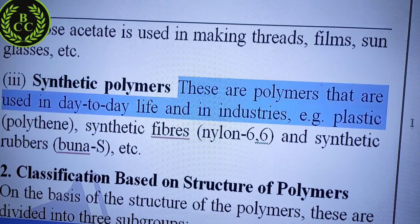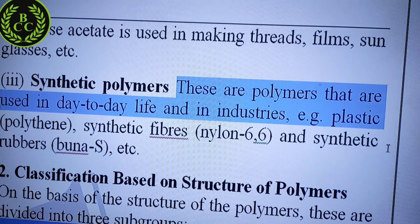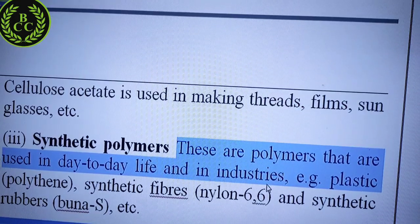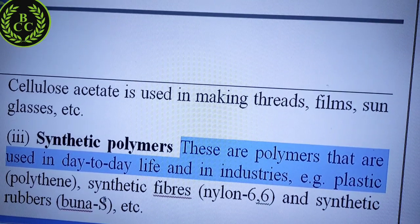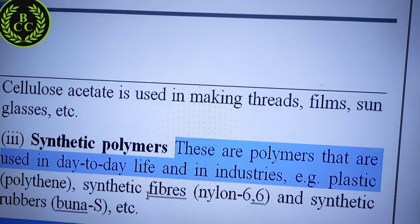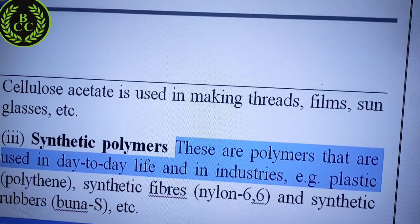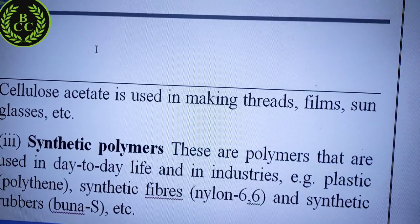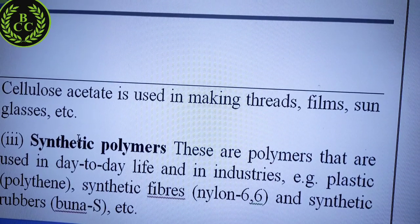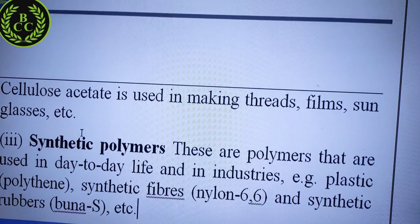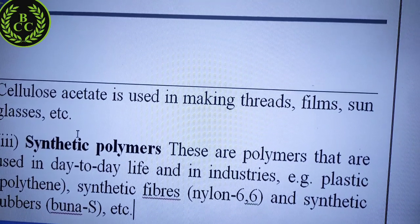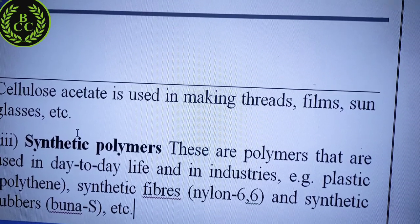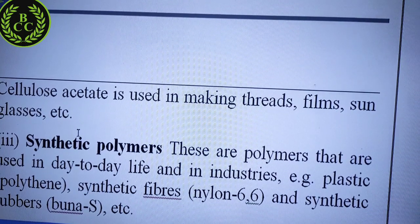Synthetic polymers are those used in day-to-day life and in industry. For example, plastics — which are very famous polymers — polythene, synthetic fibers like Nylon 6,6, and synthetic rubber such as Buna-S. Synthetic polymers are totally man-made — they are not naturally obtained, only made through chemical processes. This was our classification of polymers on the basis of source.